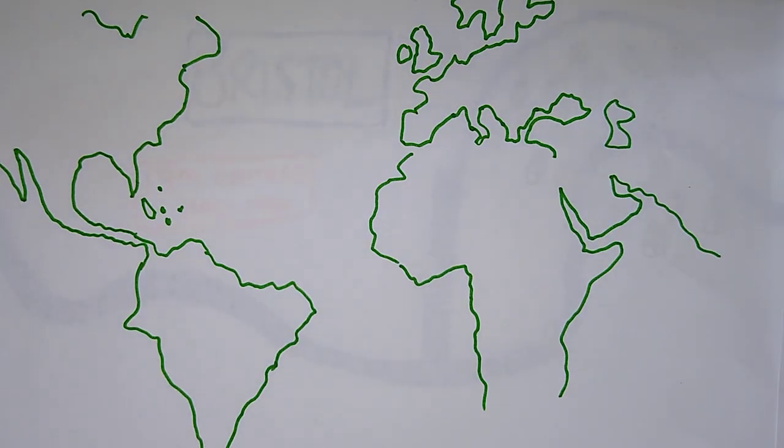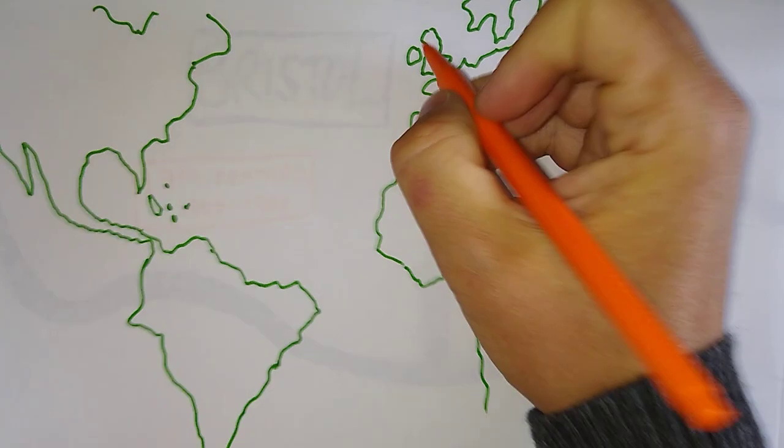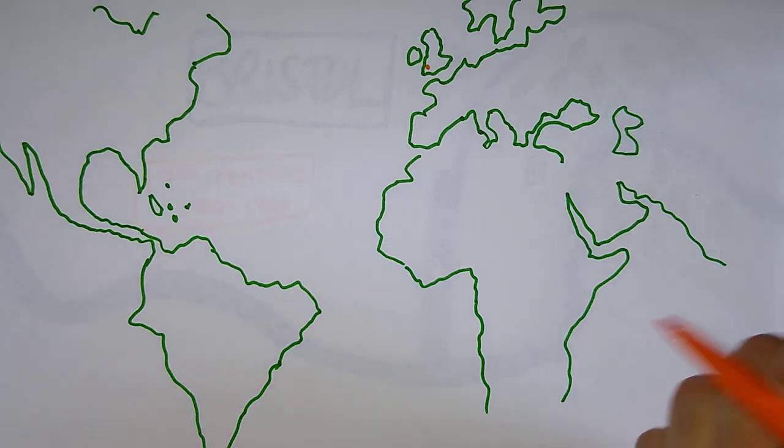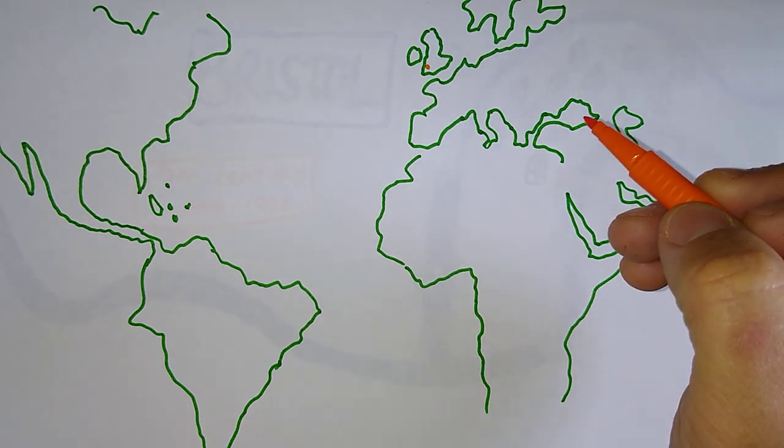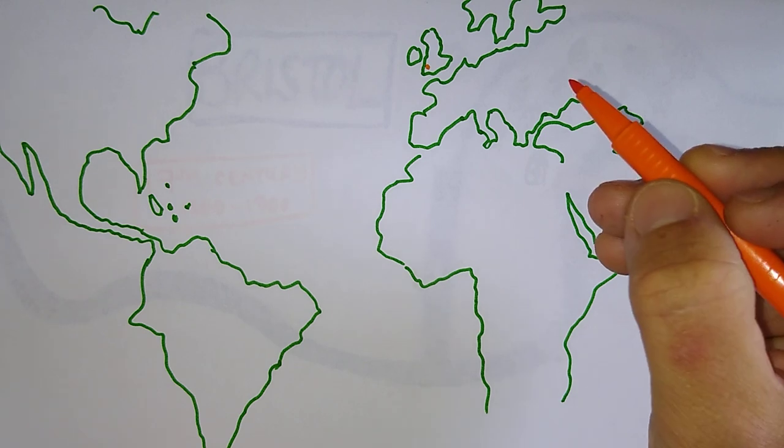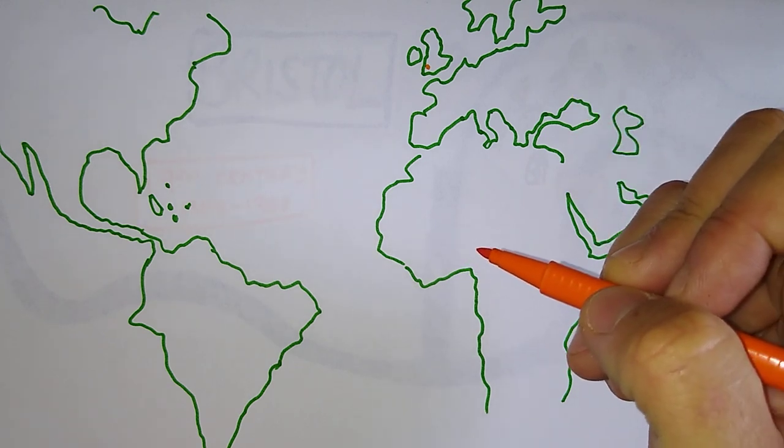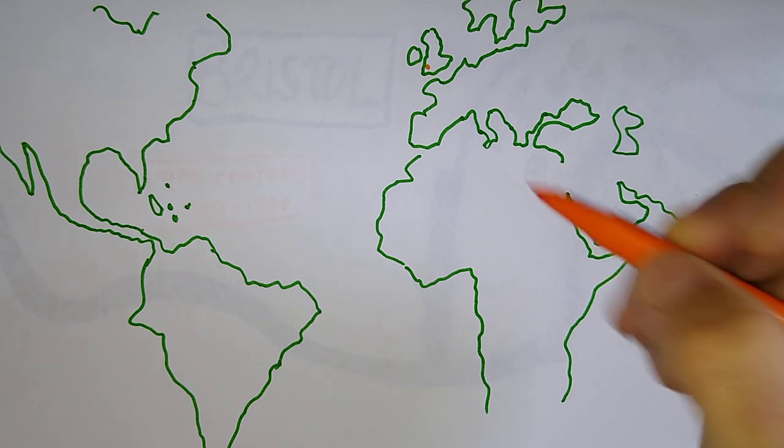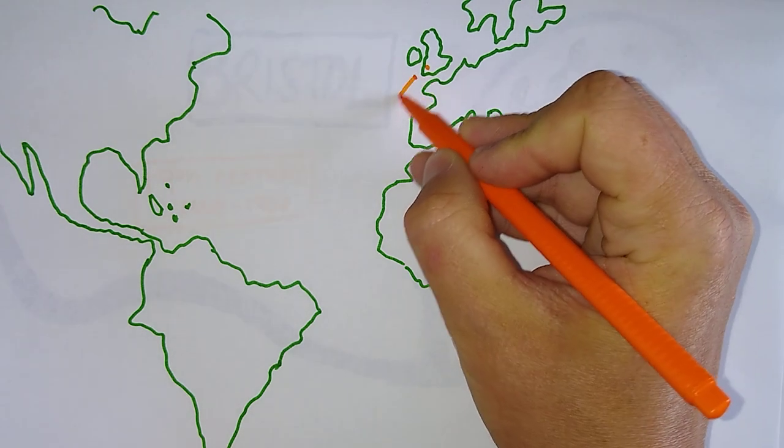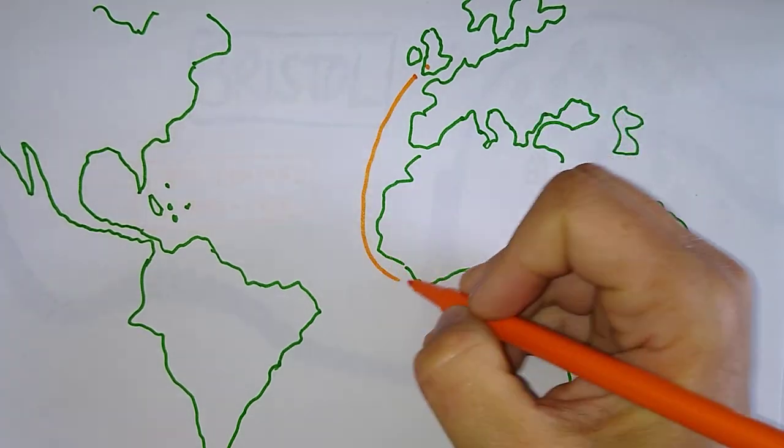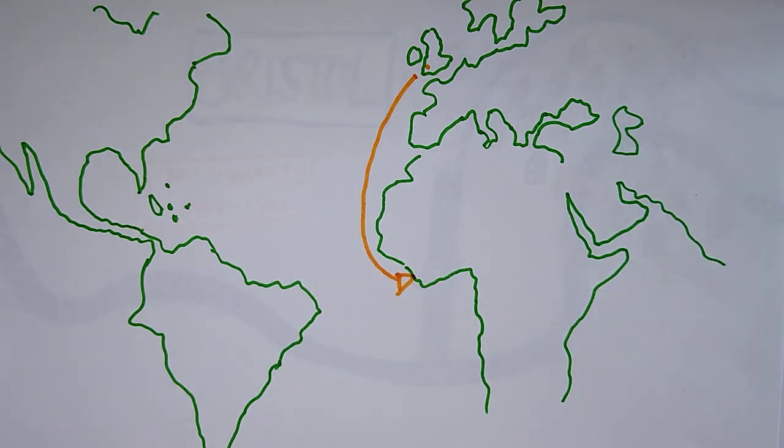So here we are with our world map. And this is where Bristol is, in the southwest of the UK. And Bristol merchants started getting involved in the slave trade. Now, to understand the slave trade, you really need to understand where the routes were and what was being traded. So firstly, Bristol merchants were going down to West Africa here.